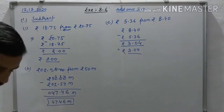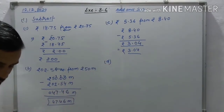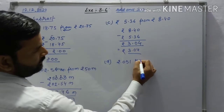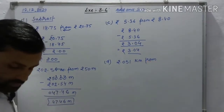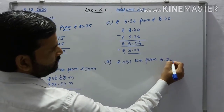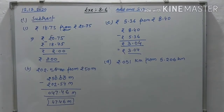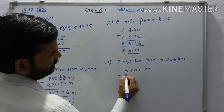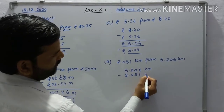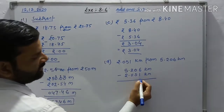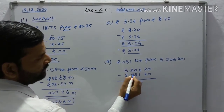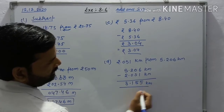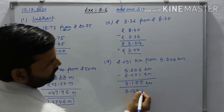Question (d): subtract 2.051 km from 5.206 km. Write 5.206 minus 2.051. 6 minus 1 is 5, 0 minus 5 — carry forward — 10 minus 5 is 5, then carry — the answer is 3.155 km.